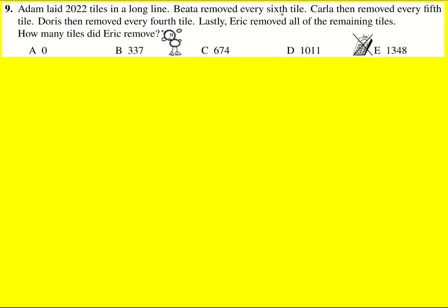If Beta removes every sixth tile, then after removing them there's going to be five-sixths left. So it's going to be five-sixths of 2022, but I'm not going to work that out straight away. I'm just going to go straight into the next calculation. Carla removes every fifth tile, so that means there'll be four-fifths of whatever there was left after that. So we're going to times the remaining amounts here by four-fifths.